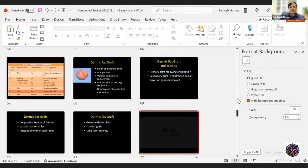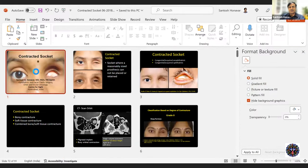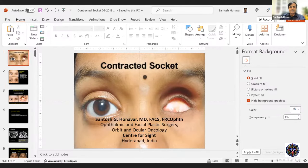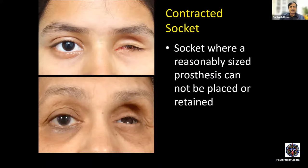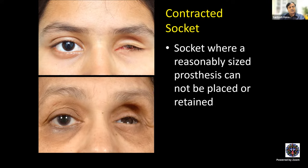Definition of contracted socket: a socket where a reasonably sized prosthesis cannot be placed or retained. This is a functional definition — there are no measurement-based definitions. Classifications include congenital or acquired, and enophthalmic or ophthalmic. Congenital ophthalmic contracted socket means severe microphthalmos. Acquired ophthalmic would mean soft tissue injury or a bony pathology resulting in contracted bony orbital cavity.